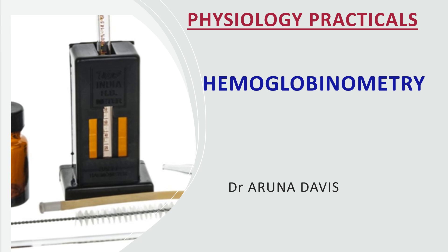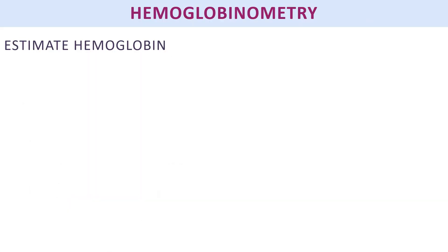In this video I am going to discuss the hematology practical hemoglobinometry, focusing on the different viva questions that can be asked and how to approach such questions for the exam. When you get the experiment hemoglobinometry, the first question will be: what is the aim of the experiment?